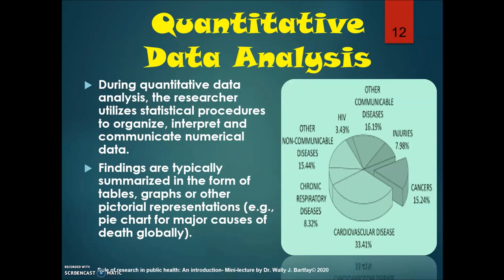In quantitative data analysis, the researcher uses statistical procedures to organize, interpret, and communicate numerical data in a meaningful way. Findings are typically summarized in the form of tables, graphs, and other pictorial representations. For example, here we see a pie chart depicting major causes of mortality globally — cardiovascular disease at just over 33%, and cancer at 15%, providing a pictorial representation of the breakdown of major causes of disease globally.